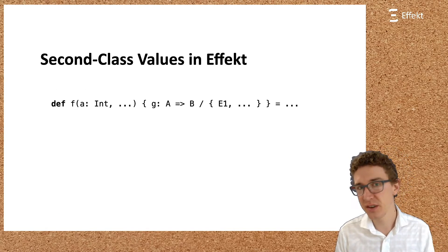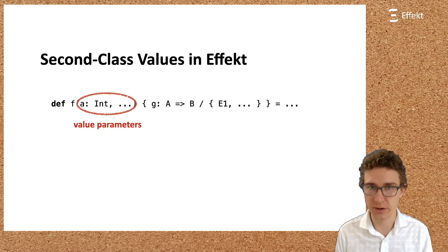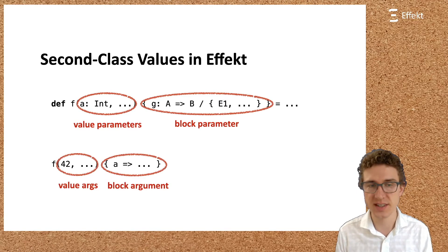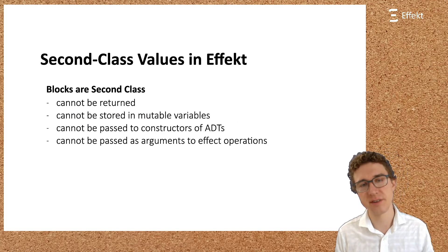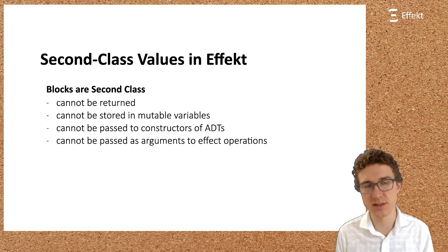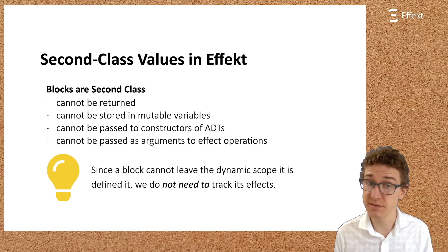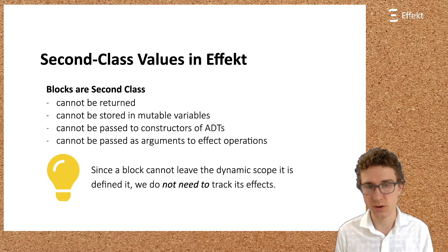The distinction between values and blocks also shows up in the syntax of our language, both in abstraction, where we expect value parameters in parentheses and block parameters in braces, and in application, where again value arguments are passed in parentheses and block arguments are passed in braces. To drive that point home again, blocks in effect are second-class. They cannot be returned, stored immutable variables, passed to constructors, and they can also not be passed as arguments to effect operations. So, since a block cannot leave the dynamic scope it is defined in, we do not need to track its effect. However, it is sometimes desirable, as I will illustrate now.